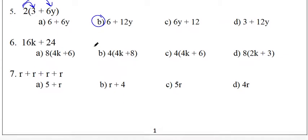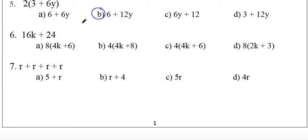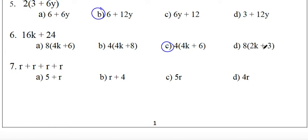Next: 16k plus 24. Let us check the options. 8 times 4 equals 32, not 16, so those are wrong. 4 times 4 equals 16 and 4 times 6 equals 24, so that is a correct choice. Also 8 times 2 equals 16 and 8 times 3 equals 24, so that is also a right choice.